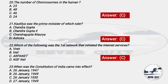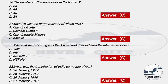Question 23: When did the Constitution of India come into effect? Options: A) 26 Jan 1947, B) 26 Jan 1949, C) 26 Jan 1950, D) 27 Jan 1949. This is an easy question. The right answer is option C — our Constitution came into effect on 26 January 1950.